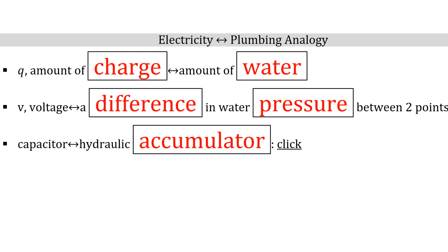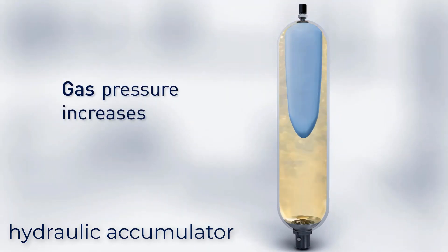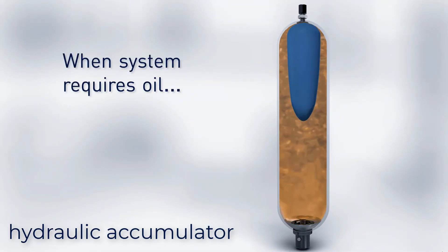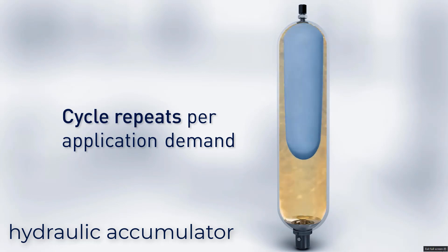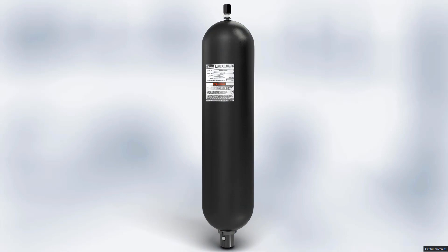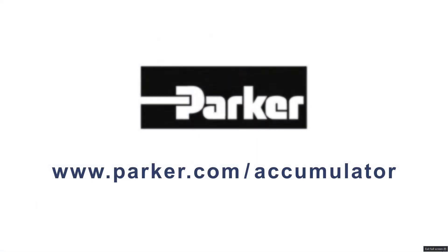Let's talk again about the electricity plumbing analogy. The amount of water that flows through a pipe is analogous to Q, the amount of charge that flows through a wire. From chapter 24, we said voltage is analogous to a difference in water pressure. A capacitor is analogous to something called a hydraulic accumulator. These devices provide clever ways of storing fluids and act as a reservoir — if you have an overflow of fluid, they absorb the overflow, and if you need some fluid, they provide what you need.